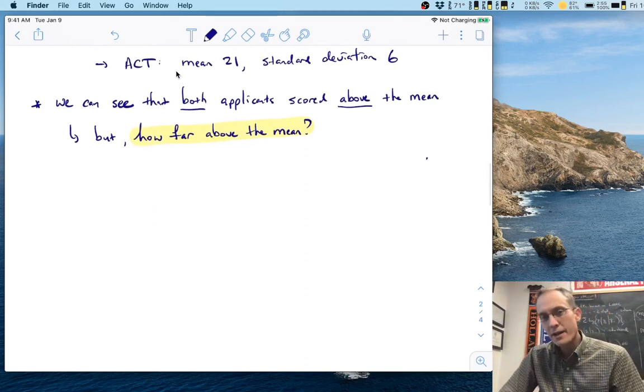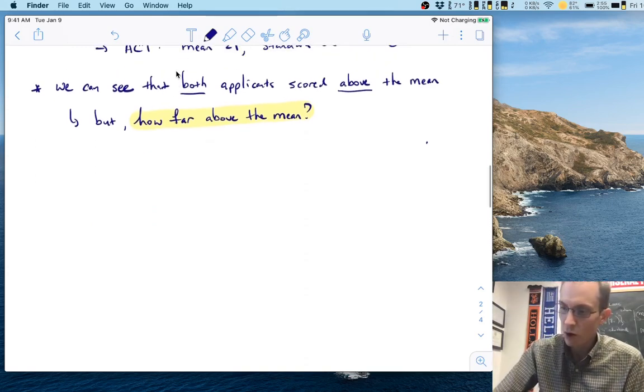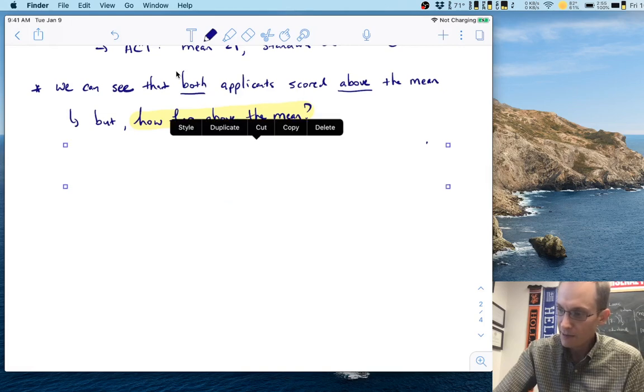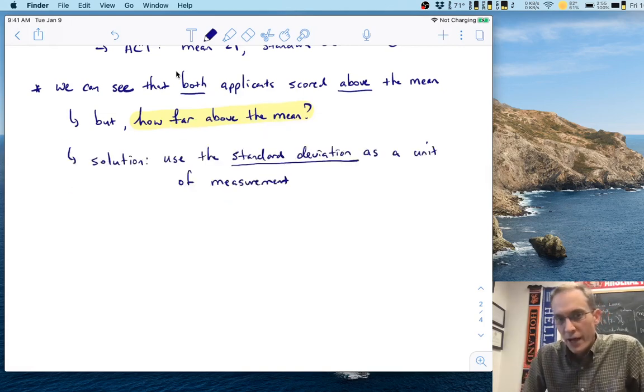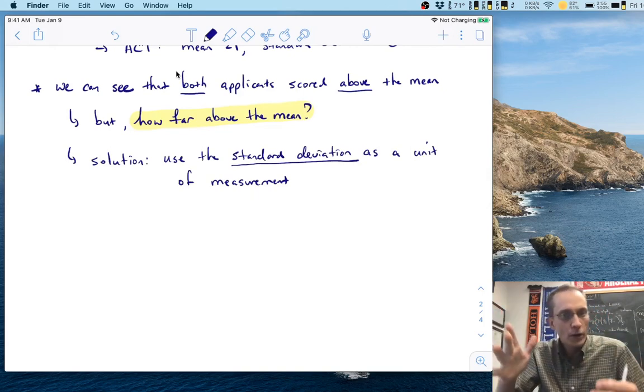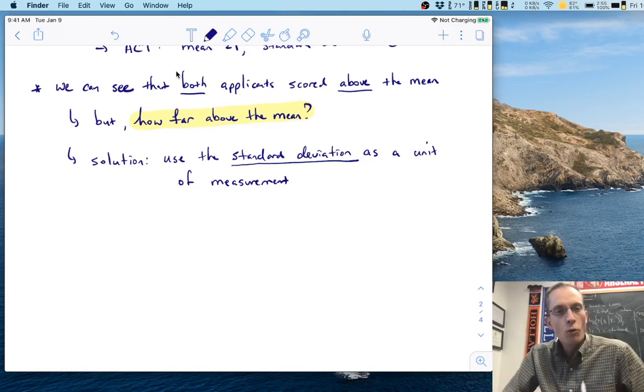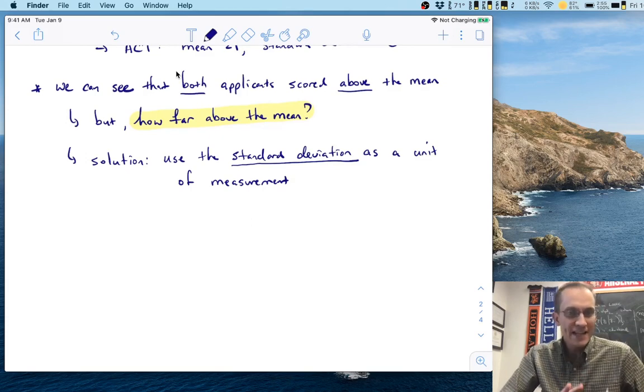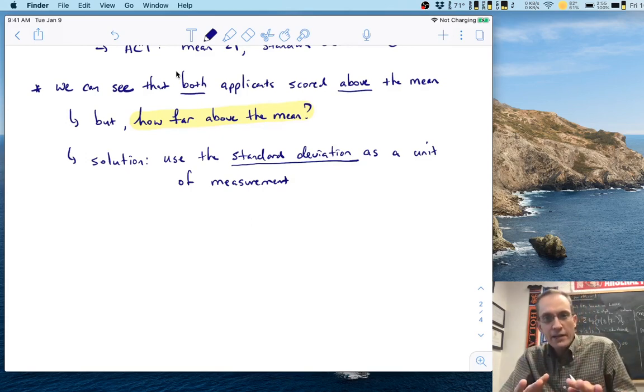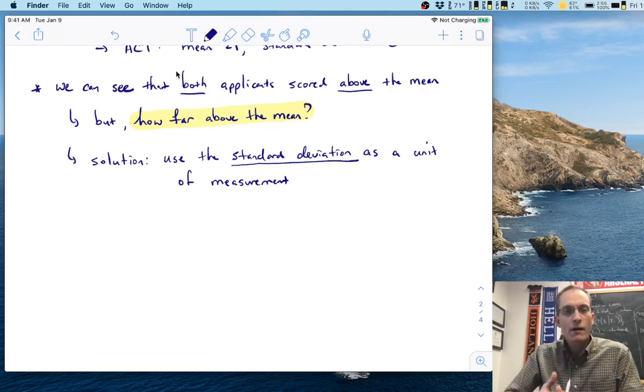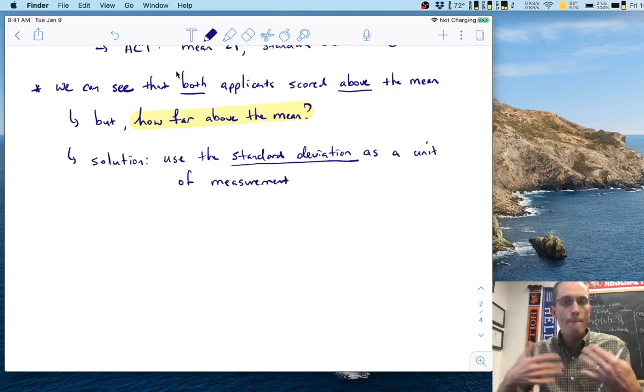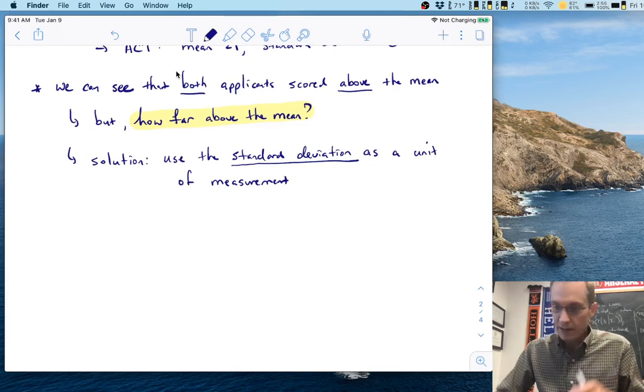But the question that we haven't answered yet is, yes, they're both above the mean, but how far above the mean? Where exactly in that distribution of scores are each of these applicants located? Now with a little bit of thought and not too much formal mathematics, we can actually solve that problem pretty nicely. What we're going to do, and this is the key trick, if you will, or the key clever breakthrough for this unit, and that is we're going to use the standard deviation as a unit of measurement.